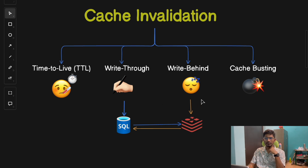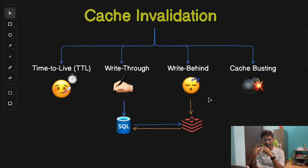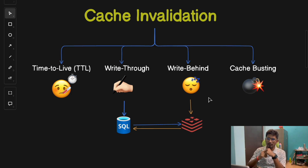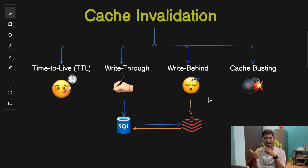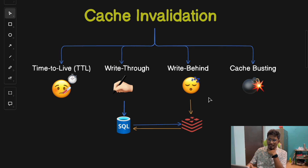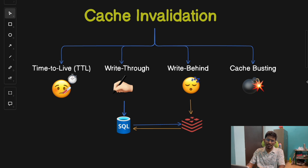The fourth technique of cache invalidation is cache busting, which is common in web applications. Cache busting uses a versioning technique by appending a unique identifier such as a version number or timestamp to the URL being accessed. For example, if a product image is updated by the server, a version counter or timestamp is added to the URL. When the user next accesses the product page, the system fetches the image again because the URL has changed, forcing the cache to fetch fresh and latest data from the server.